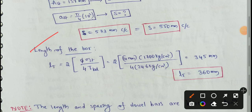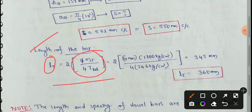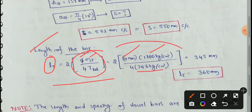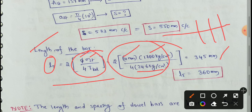Next, length of tie bar. The diameter value of the steel bar is 10 mm. Sigma st — permissible stress in steel in tension — is 1700 kg per cm². Divided by 4 into tau bd, where tau bd means design bond strength, given as 24.6 kg per cm². Simplified value is 345 mm, which rounds to a tie bar length of 360 mm as per design.